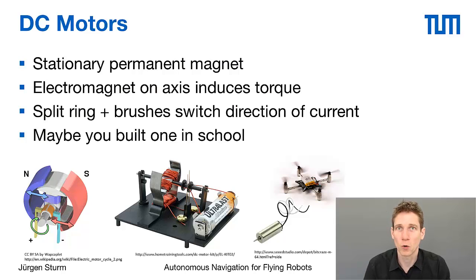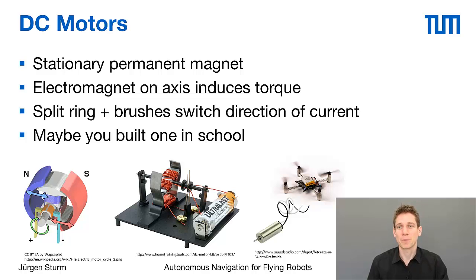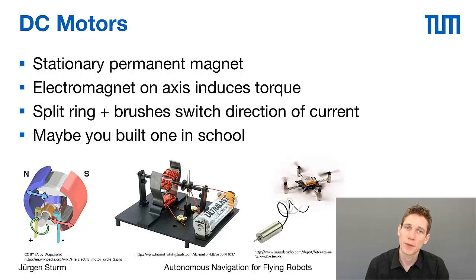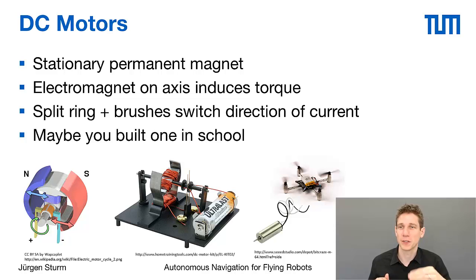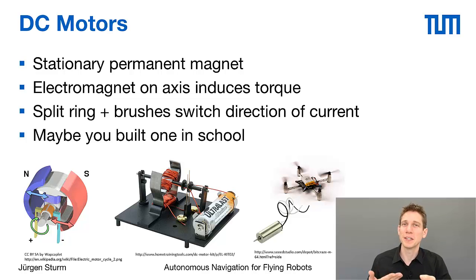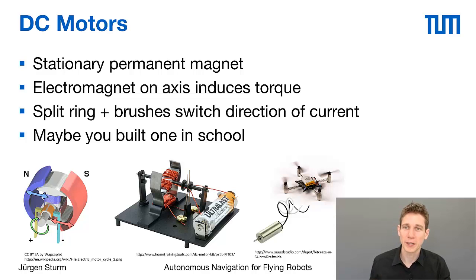A very simple motor is the so-called DC motor. It consists of two things: a stationary magnet on the outside and an electromagnet on the axis that is able to spin. The electromagnet, when switched on, induces a magnetic field that in turn induces a torque on the axis, making it spin to align with the permanent magnet on the outside. But the motion comes to a rest as soon as the magnetic fields are aligned. When this happens, a split ring changes the direction of the current such that the motion of the motor continues.